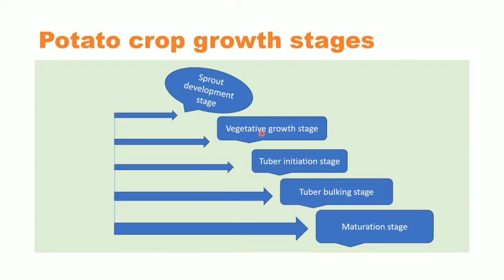The second stage is vegetative growth, the third is tuber initiation, the fourth is tuber bulking, and the fifth is maturation. There are also some reproductive stages, but in this video we are discussing these main stages in detail.